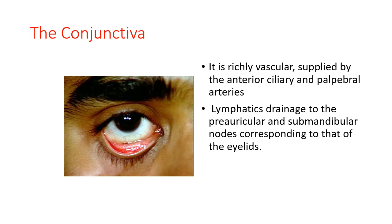When diagnosing conjunctivitis, you have to look for the type of discharge, the response of the conjunctiva, and whether the pre-auricular and sub-mandibular nodes are palpable or not. This is the triad of diagnosis of a conjunctival disease.